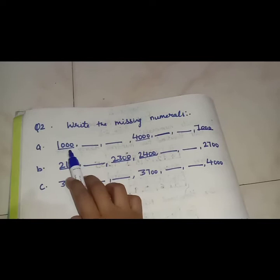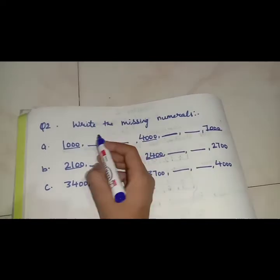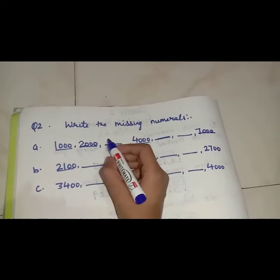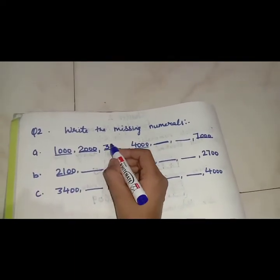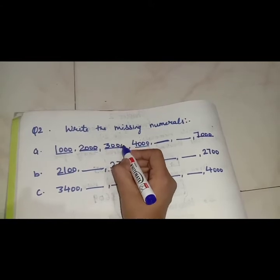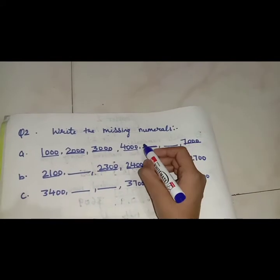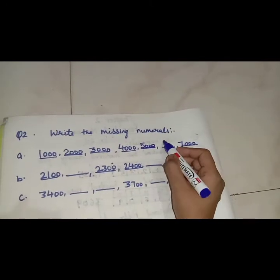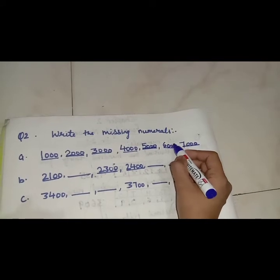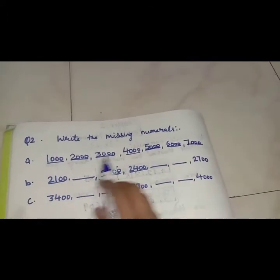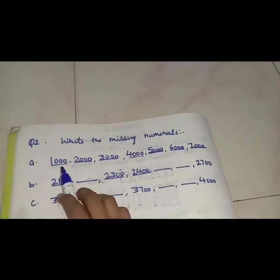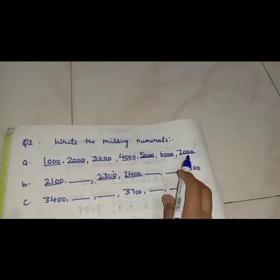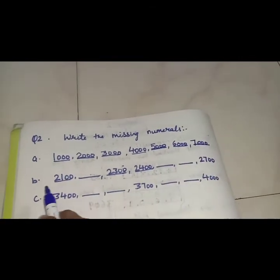Here you can see 1,000. What comes after 1,000? 2,000. So we will write 2,000 here. Then 3,000. Then 4,000 is written. Next number is 5,000, then 6,000, and 7,000 is written. So this is a counting: 1,000, 2,000, 3,000, 4,000, 5,000, 6,000, and 7,000.